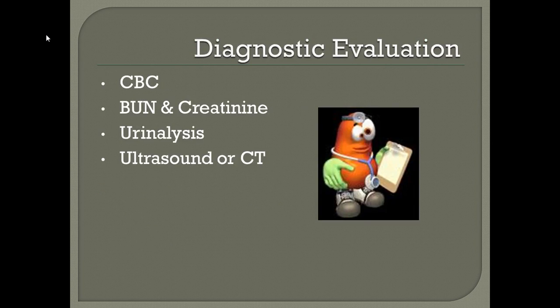For diagnostics, we look at a CBC — specifically an increased white count — as well as BUN and creatinine, which will be elevated. Urinalysis will show the presence of blood and protein. Ultrasound and CT scan will show enlarged kidneys. We also look at an anti-streptolysin O titer, which is positive in patients with AGN.